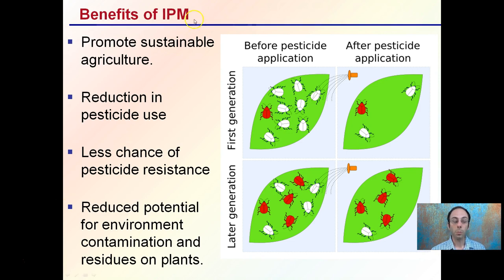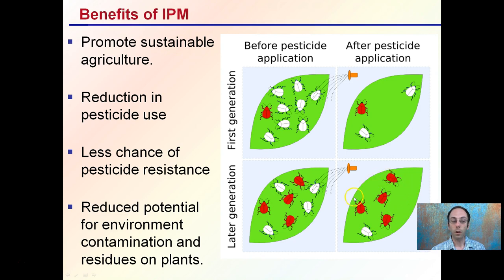The benefits of IPM are to promote sustainable agriculture, reduce pesticide use overall, and lessen the chance of pesticide resistance. Before pesticide application, we have a first generation and we apply a spray control. After application, many insects are killed but a few remain. In the next generation their numbers increase, and if we apply the same pesticide, the resistant insects — shown here as red bugs — survive, artificially selecting for that resistant population. Using integrated pest management reduces this from occurring, reduces environmental contamination, reduces residues on plants, and lessens the chance of insects developing resistance to a particular product, so we're managing them effectively while still maximizing plant growth.